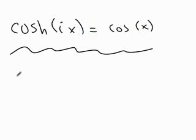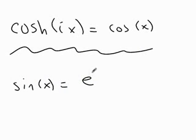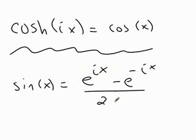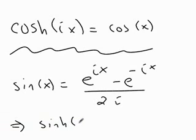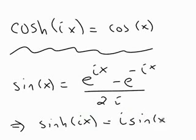I'll leave it to you using similar high jinks. You can show that the sine of x is e to the ix minus e to the negative ix over 2i, which means that the sinh of ix is i times the sine of x.